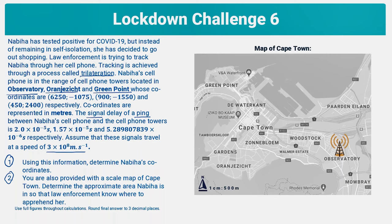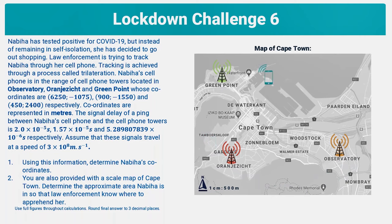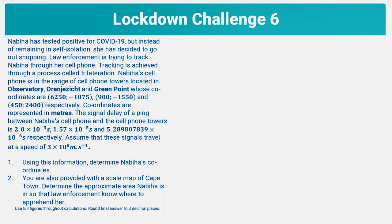So we can see the Observatory tower here, the tower in Urania Zest here, and our tower in Greenpoint here. Our cell phone is somewhere in Cape Town, but we don't exactly know where it is. Our first step is to use the times given for the signal to reach the cell phone from each tower to calculate the distance between the cell phone and each tower.